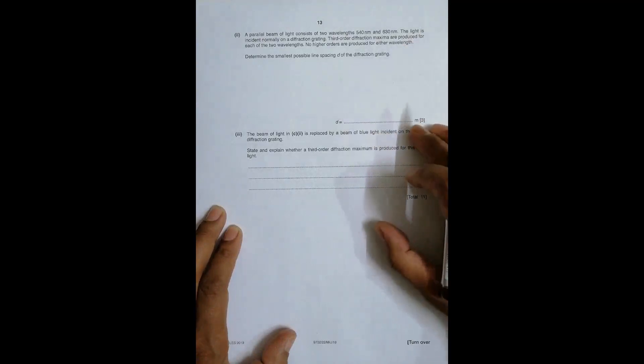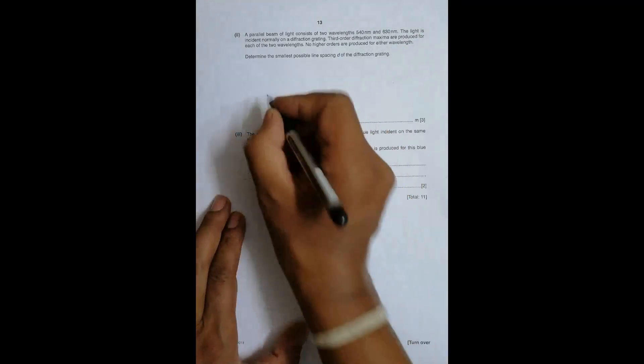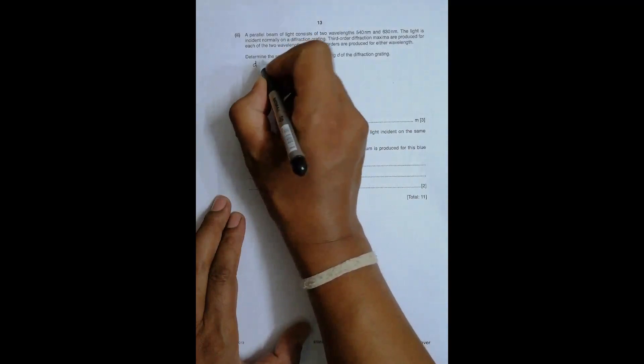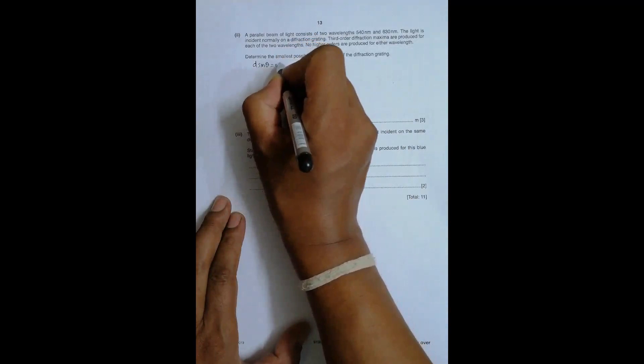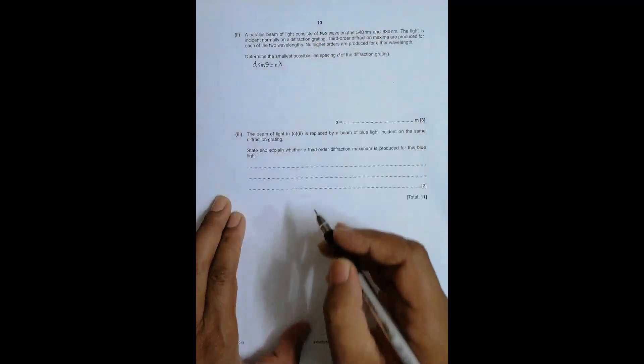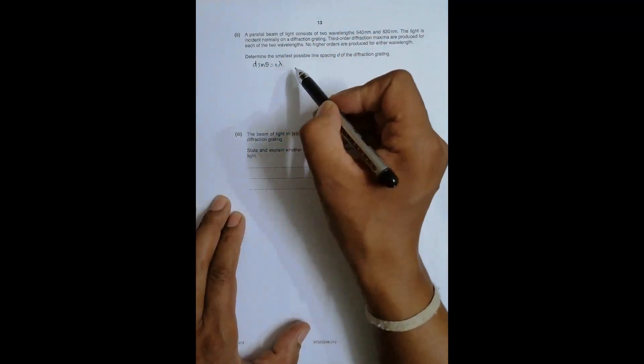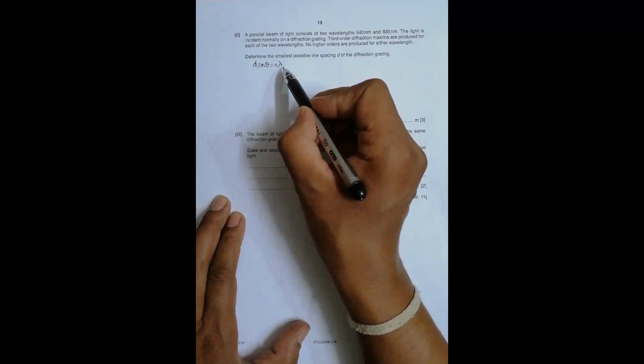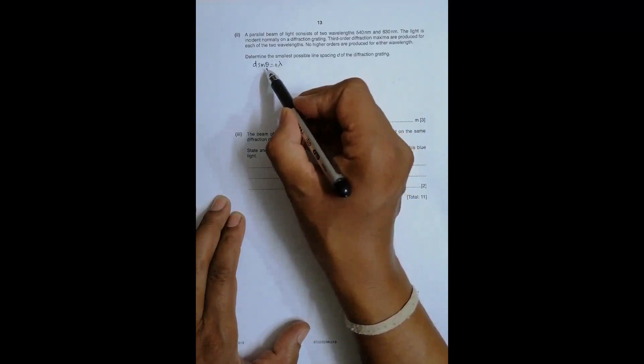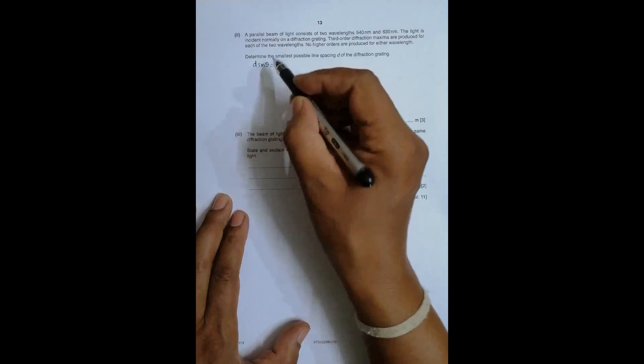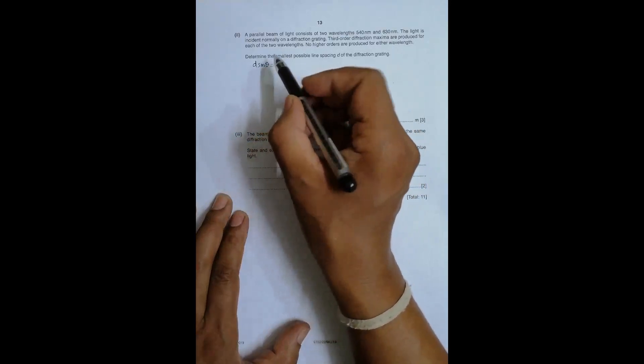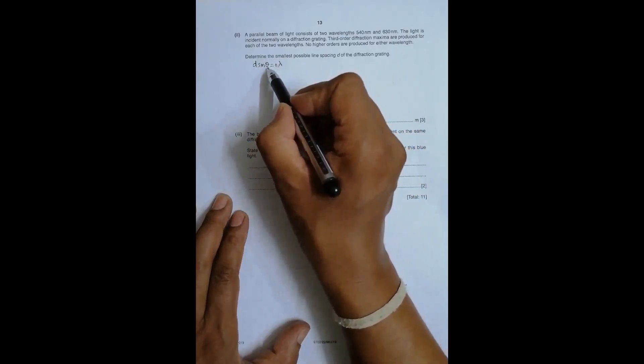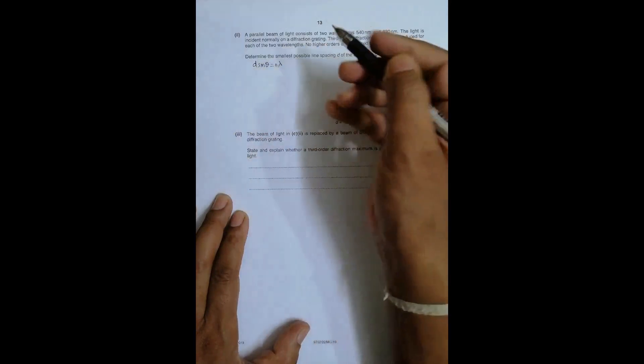We have to find the smallest possible line spacing of the diffraction grating for this to happen - for third order to be produced but not larger orders. One thing that we have to remember is the equation for the spacing: d sin θ equals n λ. That means as we increase the order, somewhere the angle will be 90 degrees, after which no fringe will be formed.